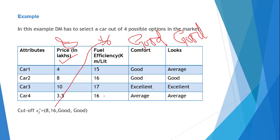For comfort, he will need at least a comfort level of good, so good and excellent will be acceptable. Similarly for looks, good and excellent will be acceptable. For price, cutoff value is 8, so 8 lakhs is the highest price he is ready to pay. Car 1 with 4 lakh price is selected; car 4 with 3.5 lakhs is also selected. This is how cutoff values work.